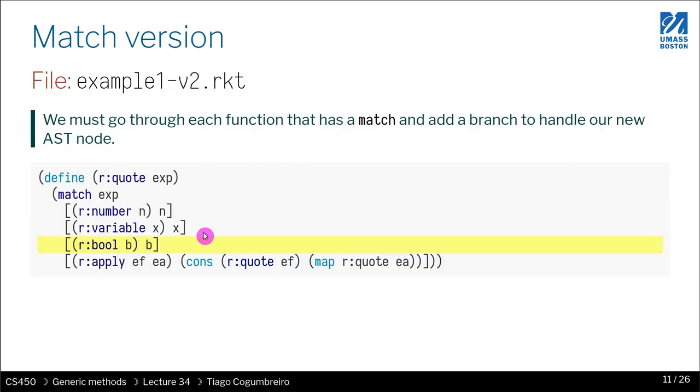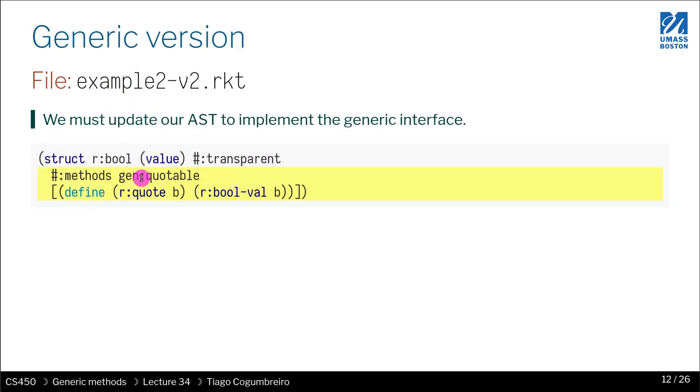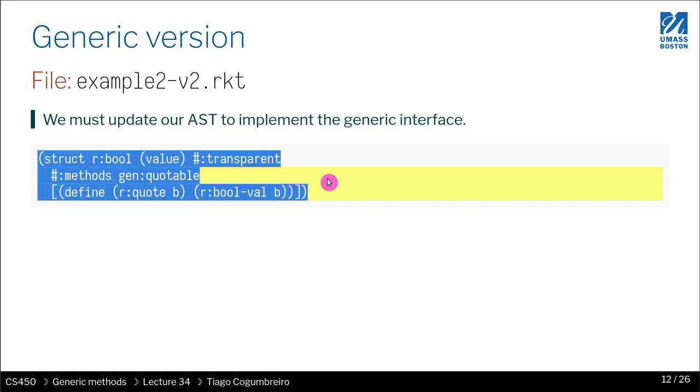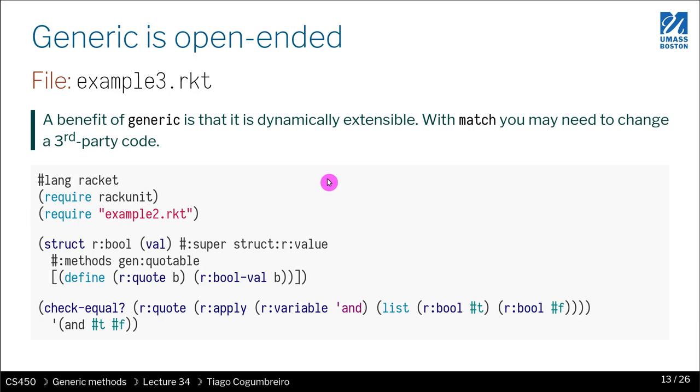Just to recap, for the match version, we had to go ahead and change the function r-quote. Whereas with the version of generics, we simply had to create a new structure and everything magically worked. The quotable is now handling booleans as well. The problem becomes, what you have is this notion of sealed or open data structures, or in this case functionality. We have this function called quote, or this functionality called quotable. We implement it in two ways.